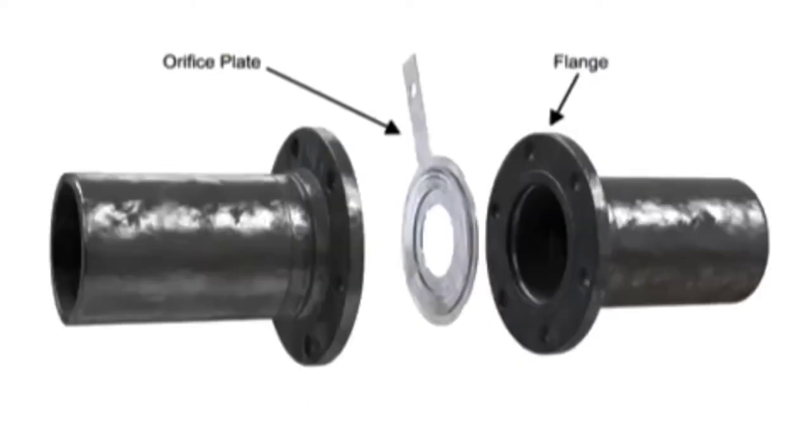The differential flow meter, whether Venturi tube, flow nozzle, or orifice plate style, is an inline instrument that is installed between two pipe flanges.